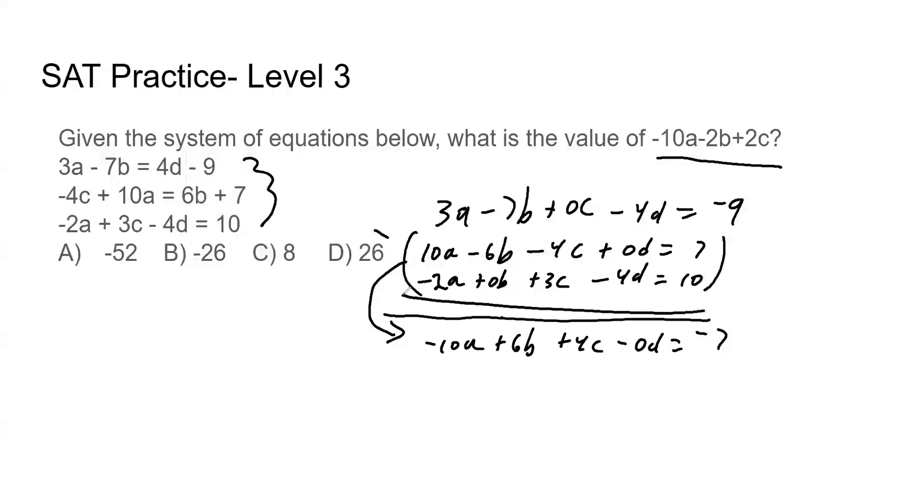I get minus 10A plus 6B plus 4C minus 0D equals negative 7. I'm going to do the same thing for this equation. Why am I doing this? Again, this is just my gut feeling. It's just trial and error. It's experience. I hope it works.